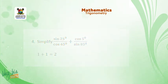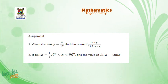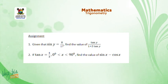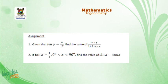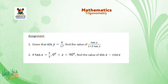Before we end, here are some assignment questions. Question one: given sin y = 8/17, find the value of tan y over (1 + 2 tan y). Question two: if tan x = 4/3 and x is between 0 and 90 degrees, find the value of sin x − cos x. Thank you for listening.